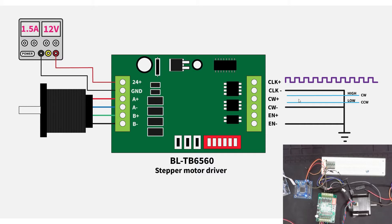The second input controls direction: if it's high the motor rotates clockwise, and if it's low it rotates counterclockwise. There are also EN-plus and EN-minus pins, though I haven't connected them here — you don't necessarily need the EN pin to get the motor running.